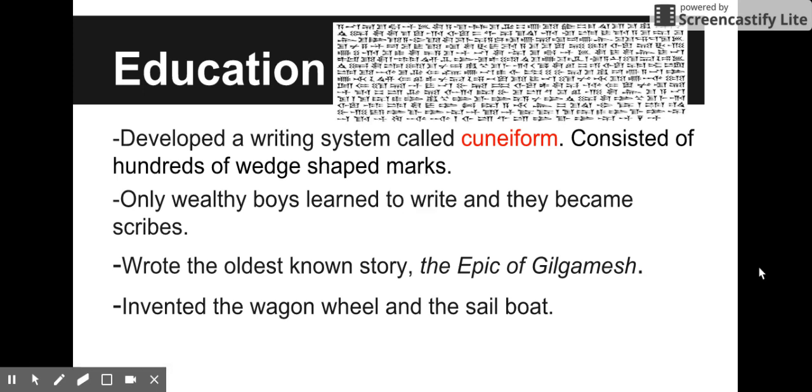In terms of education, the Mesopotamians developed a writing system called cuneiform. This consisted of hundreds of wedge-shaped marks. They would take a pretty solid piece of clay and a writing utensil, similar to a stylus we use for electronics now, and they would draw into the wet clay which would then harden.